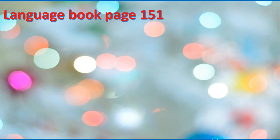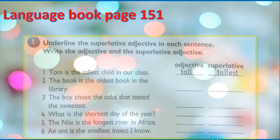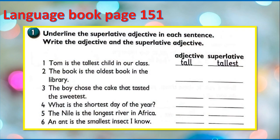Now open your language book, page 151. Underline the superlative adjective in each sentence. Number one: tallest. Number two: oldest. Number three: sweetest. Number four: shortest. Number five: longest. Number six: smallest.